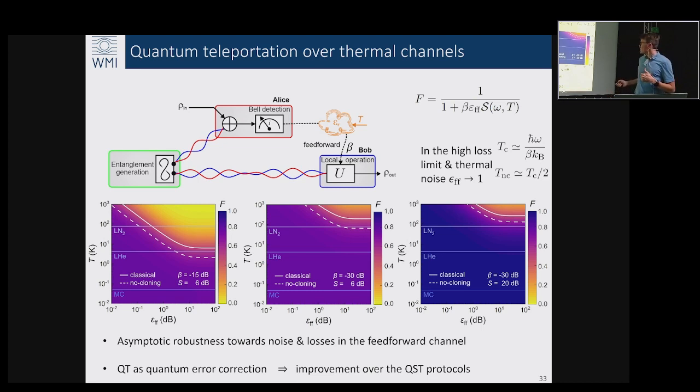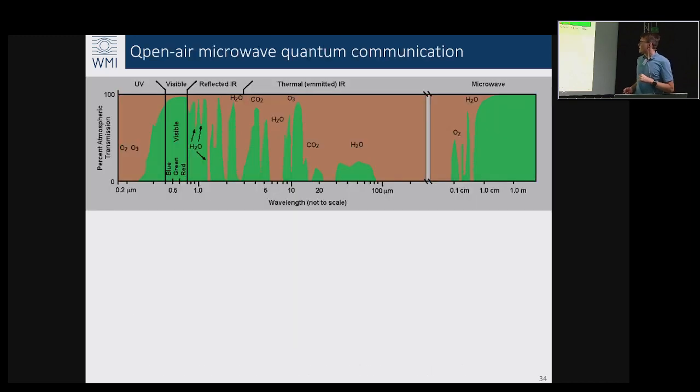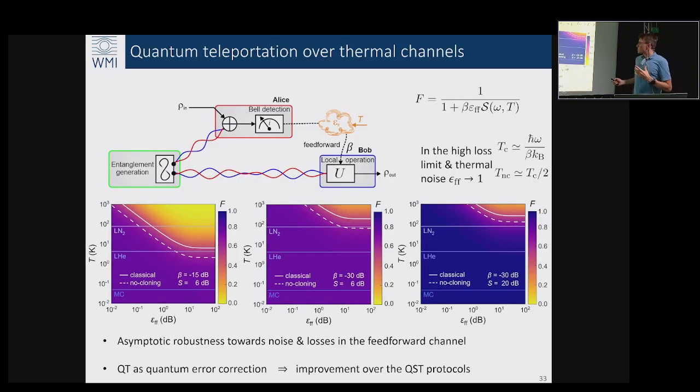It effectively acts as a quantum error correction for these imperfections, and this is why it's a very important and big improvement over the QST protocols. When we put in numbers, we found out which we definitely should be able to tolerate the temperatures in the feedforward up to liquid nitrogen temperatures like 77 Kelvin or maybe with some effort even at room temperatures 300 Kelvin, although we would need to adjust the squeezing and the coupling related to the local operation at Bob appropriately.